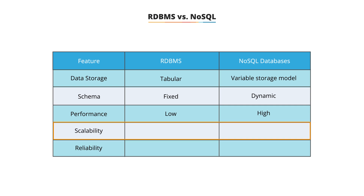And scalability: RDBMS supports vertical scaling. To handle more data, RDBMS typically requires a bigger server. However, this will increase the cost and is much more difficult to do than horizontal scaling that is supported by NoSQL. You can scale a NoSQL horizontally across multiple servers. Multiple servers are cheap commodity hardware or cloud instances that make scaling cost-effectively horizontally much more efficient compared to vertical scaling.